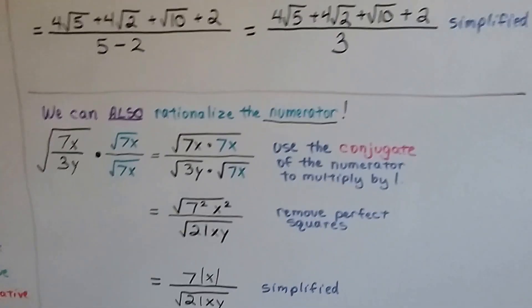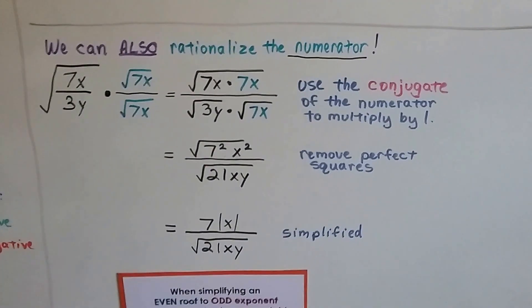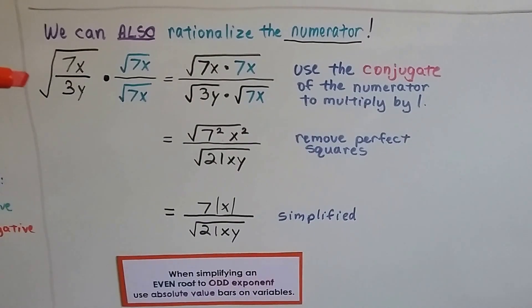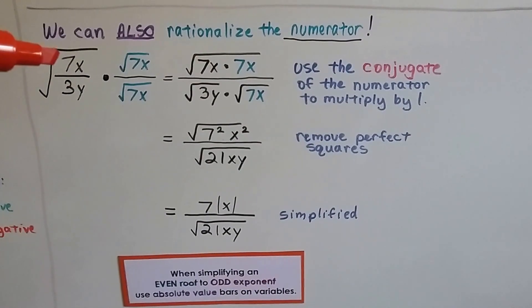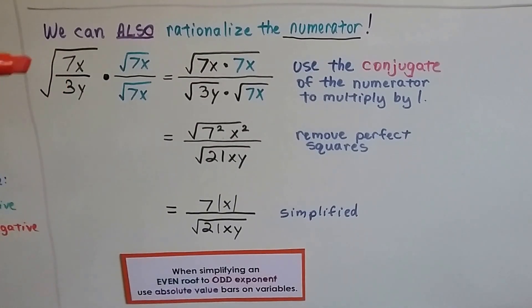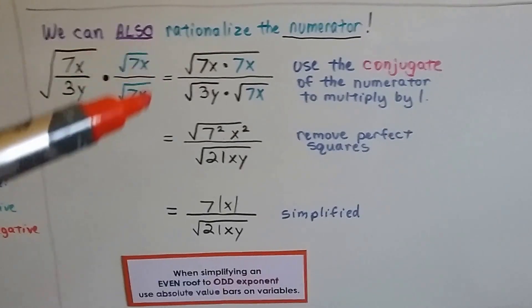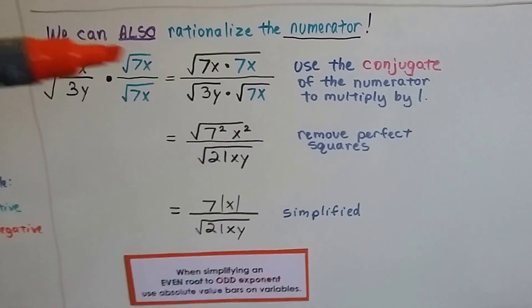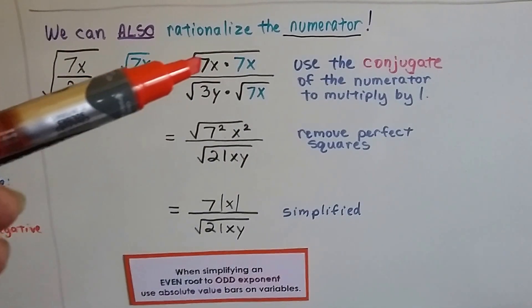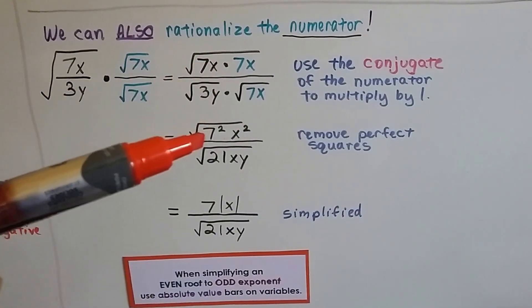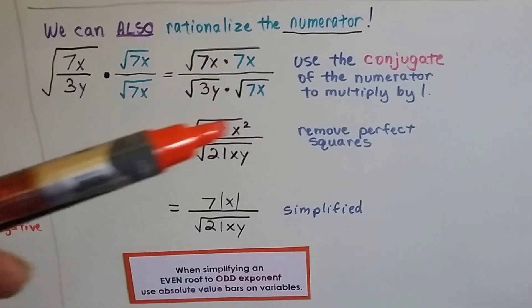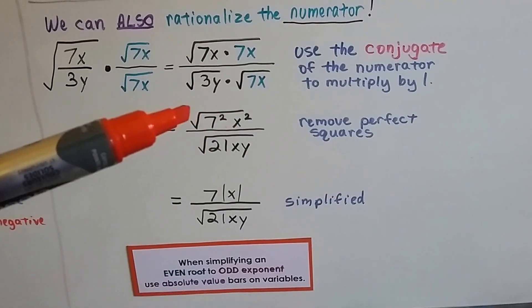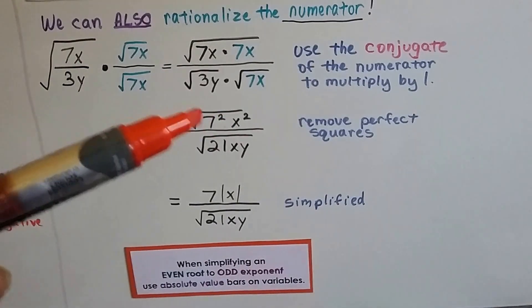Now here's what's cool. We can also rationalize the numerator. It's not just the denominator. We can rationalize a numerator. So we've got the square root of the quotient of 7x and 3y. We can take this 7x and make it our 1 and multiply the numerator and denominator by the 7x. That's going to give us 7x times 7x, which is 7x squared. And when we remove this radical sign, because it's a perfect square, we remove our perfect squares, we just get 7x.